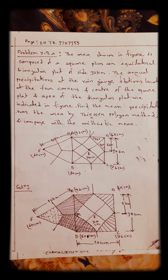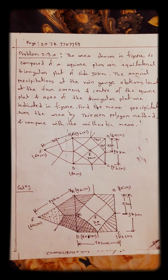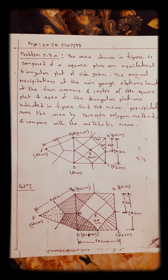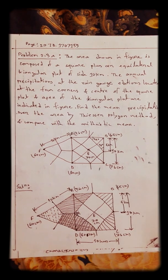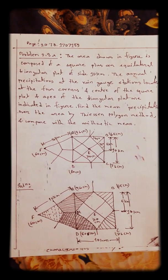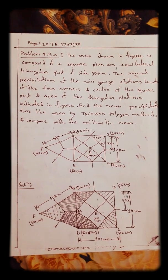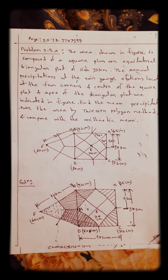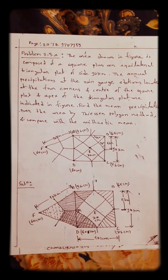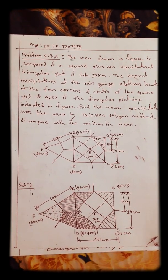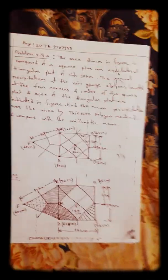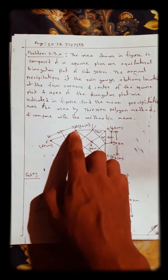Here is our big math problem: the area shown in the figure is composed of a square plus an equilateral triangular plot of side 10 kilometers. The annual precipitation at the rain gauge stations located at the four corners and the center of the square plot, and the apex of the triangular plot, are indicated in the figure. Find the mean precipitation over the area by the Thiessen polygon method and compare with the arithmetic mean.